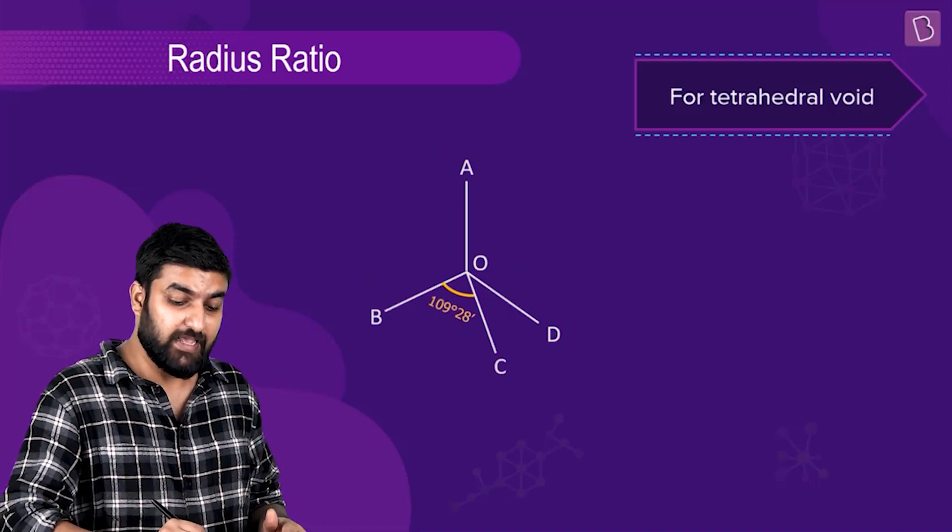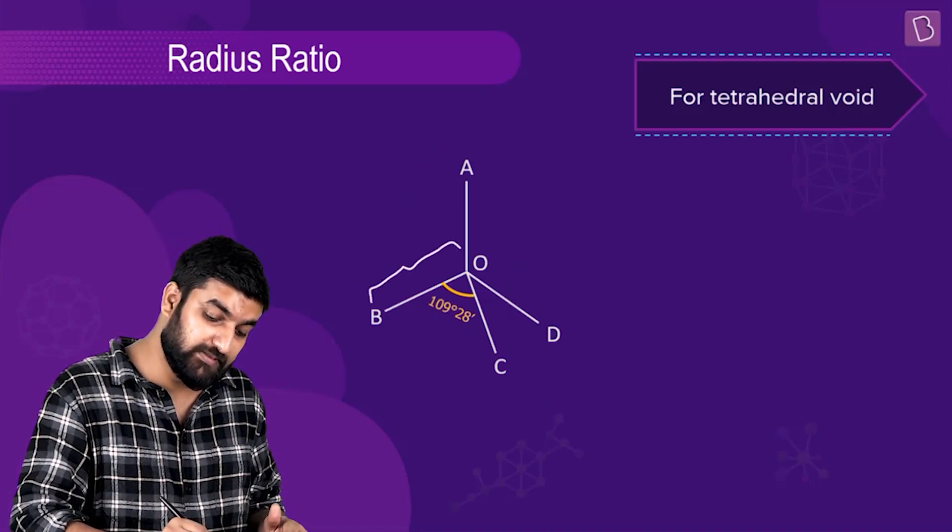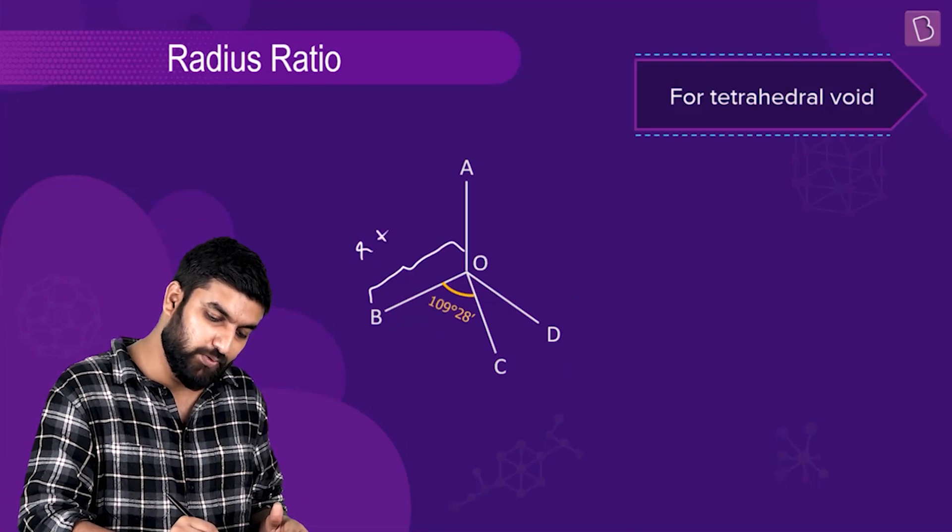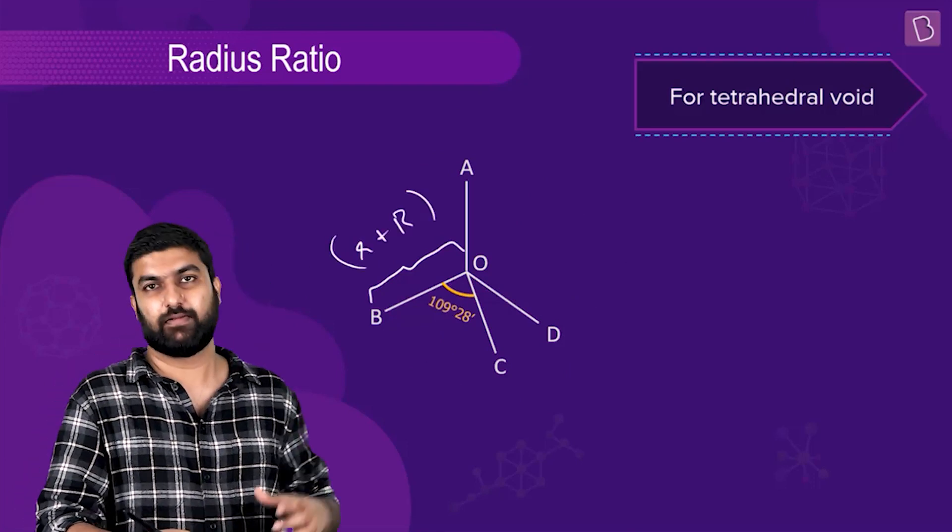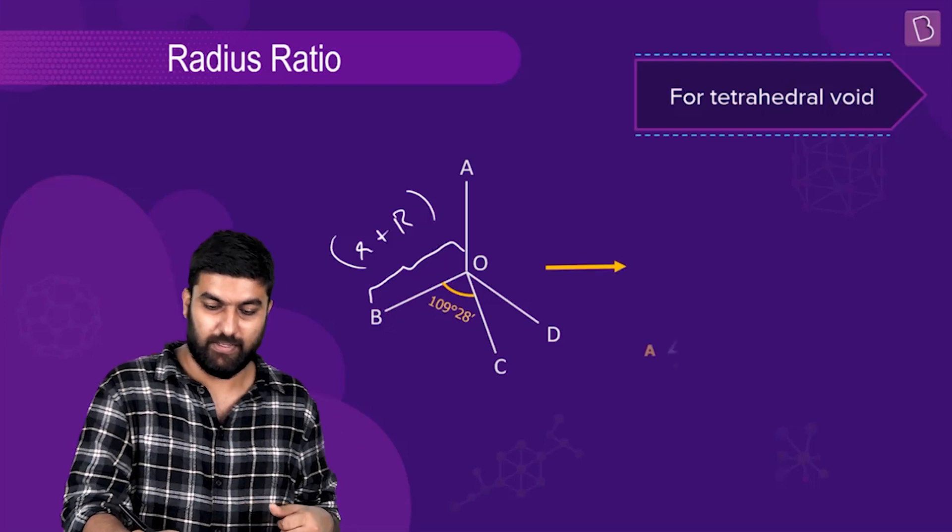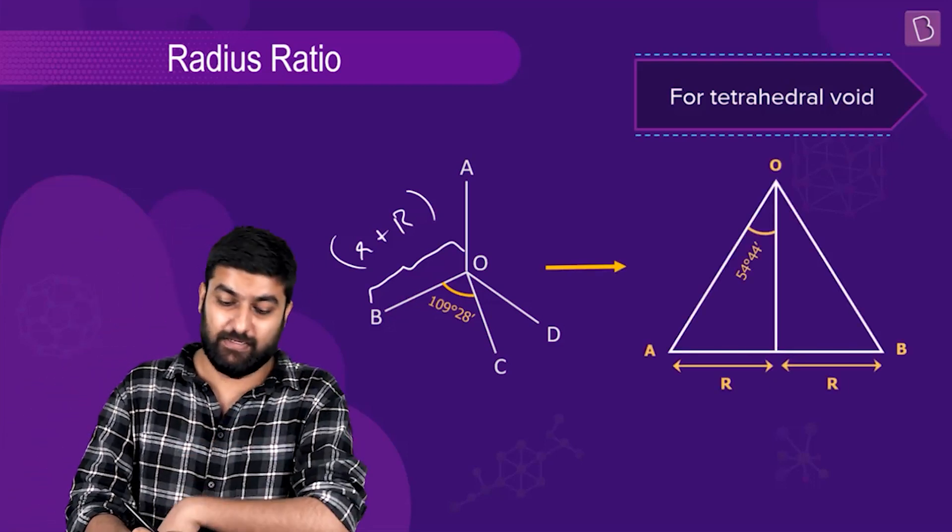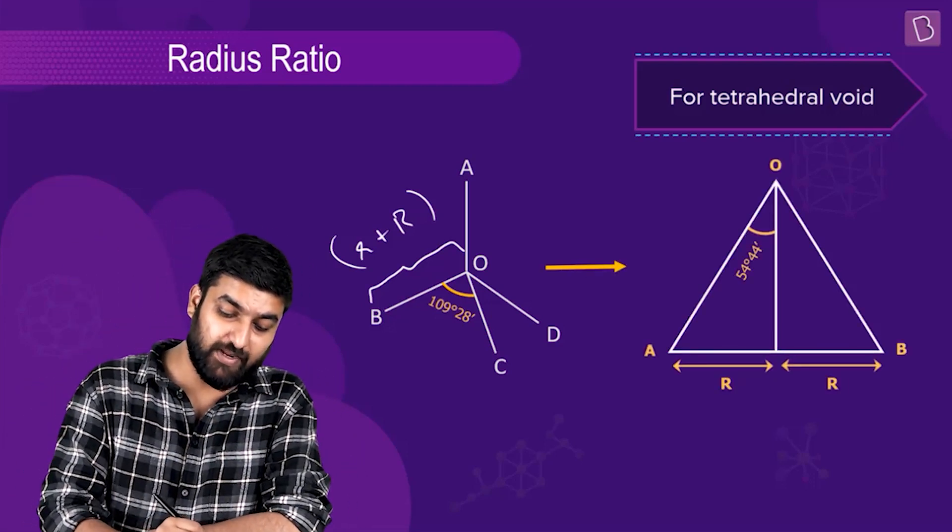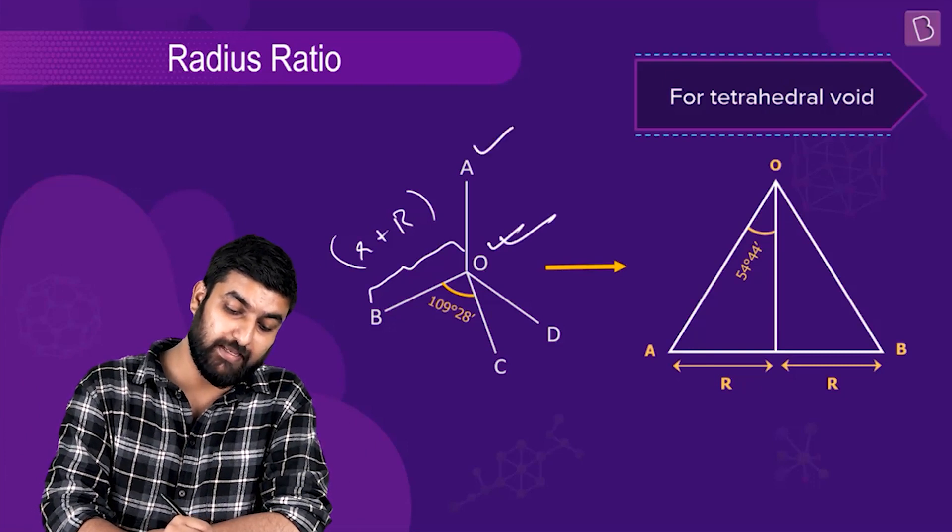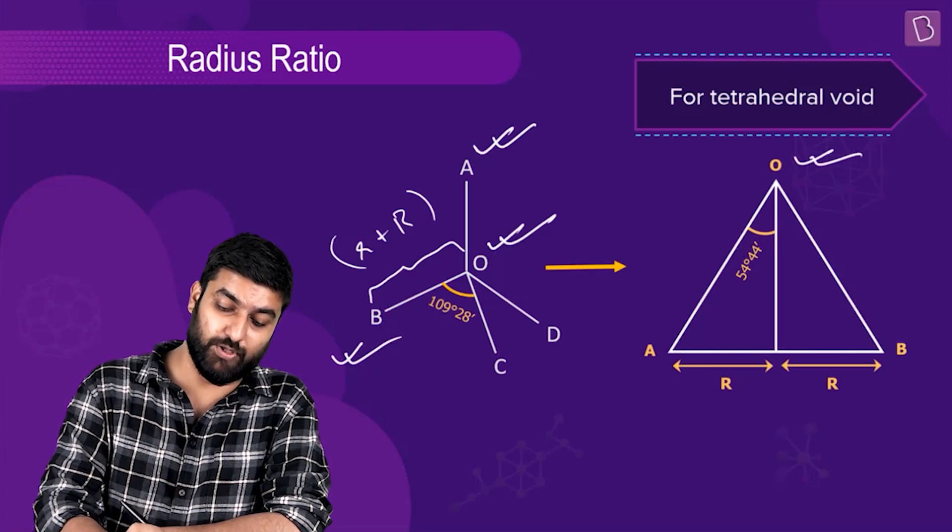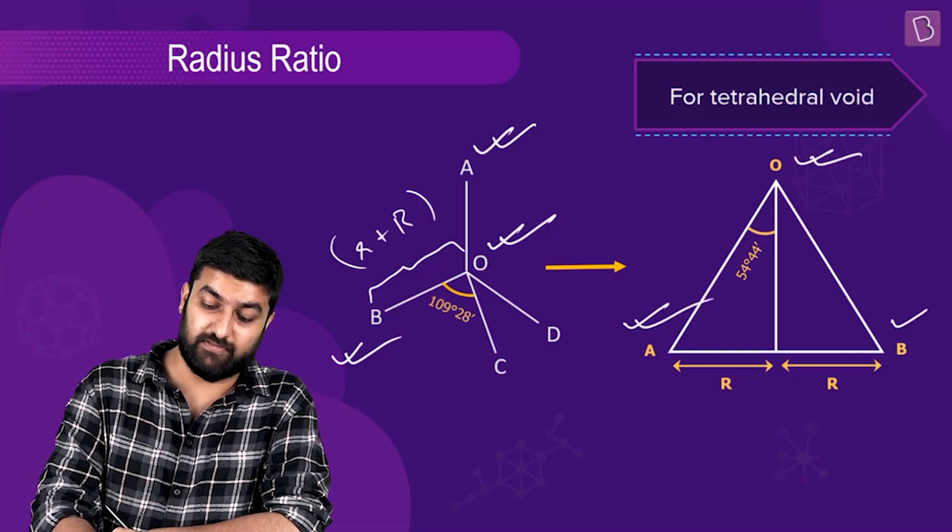If I take this triangle - which triangle am I talking about? O, A, and B. So in this triangle, the base obviously turns out to be 2R. How do we get the 2R? Well, we connected A and B with each other, so we got 2R.